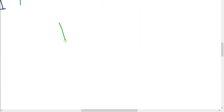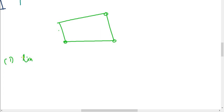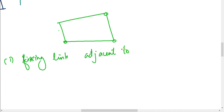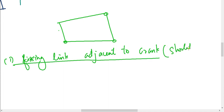There are 4 links in total. This is the smallest link. For the first inversion, we fix the link adjacent to the shortest link, making the shortest link act as a crank. The link adjacent to the shortest link is fixed, and the shortest link adjacent to it becomes an active crank.